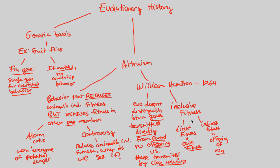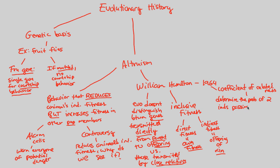Fitness is not just about yourself — it's also about those who are closely related to you. Hamilton developed something called the coefficient of relatedness. Evolution will specifically act upon this coefficient, which allows us to determine the probability of two individuals passing down alleles from the same common ancestor. The coefficient assigns a number to relatedness between individuals.